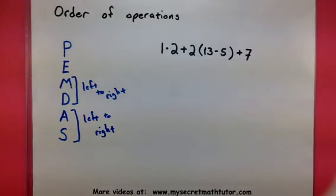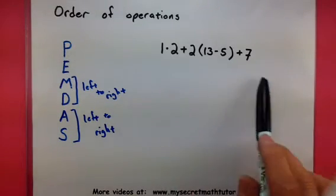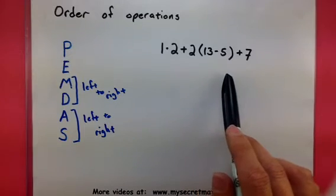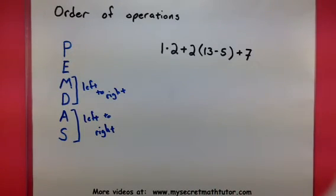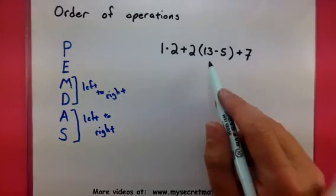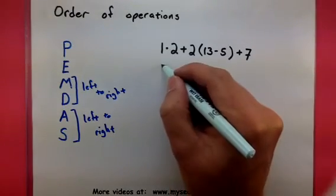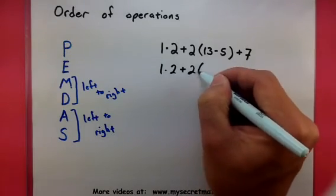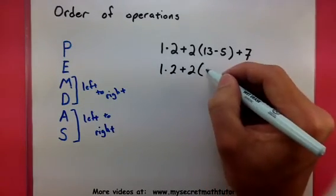This mnemonic is going to help us evaluate this expression: 1 times 2 plus 2 times (13 minus 5) plus 7. The first thing I need to take care of is anything in parentheses, so that's the 13 minus 5. 13 minus 5 is 8.